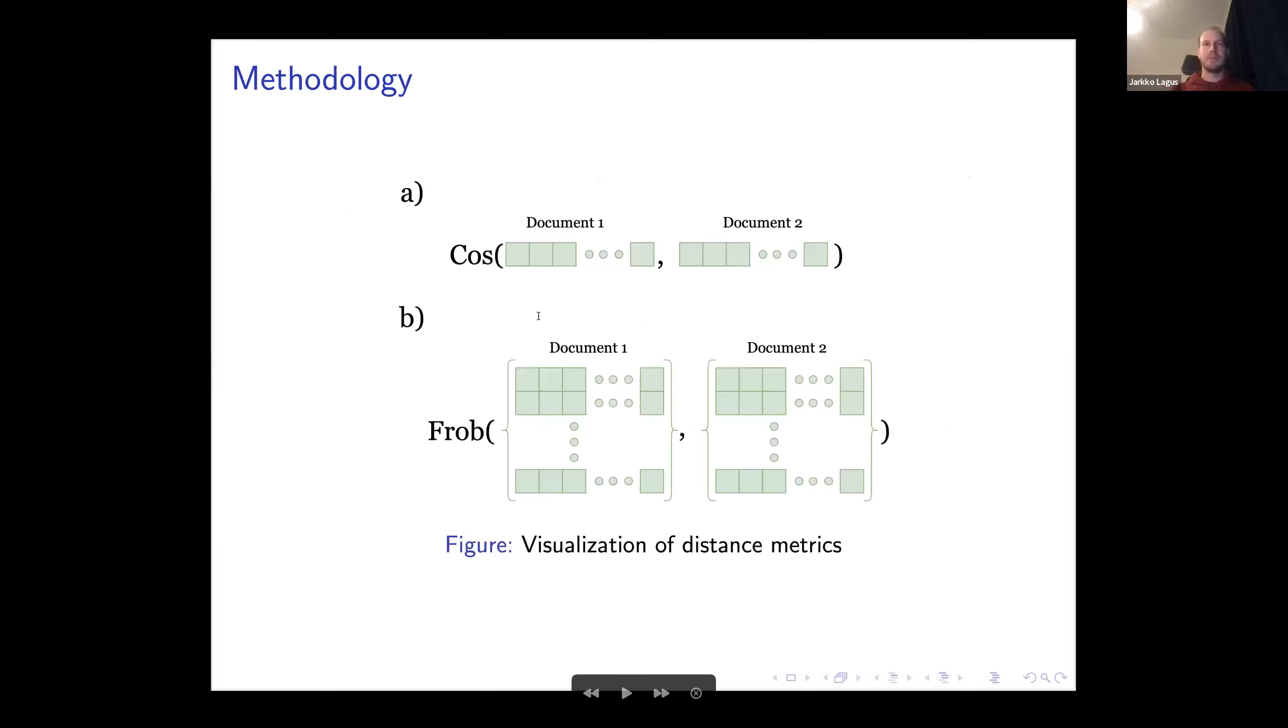This is the visual representation of how these differ. In the cosine setting, we have two vectors. In the second-order case, here it's called the Frobenius distance, you have matrices as inputs. These are specifically, in this case, covariance encodings.